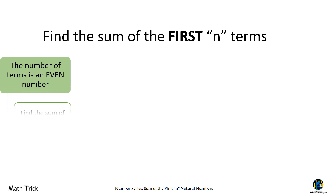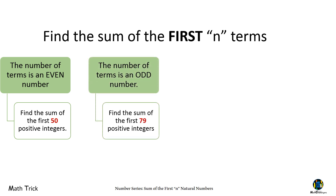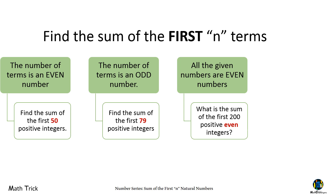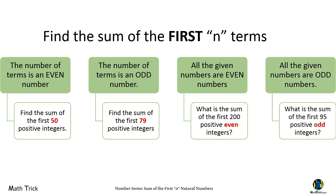Topic 1: The number of terms is an even number. Example: find the sum of the first 50 positive integers. Topic 2: The number of terms is an odd number. Example: find the sum of the first 79 positive integers. Topic 3: All the given numbers are even numbers. Example: what is the sum of the first 200 positive even integers? Topic 4: All the given numbers are odd numbers. Example: what is the sum of the first 95 positive odd integers?